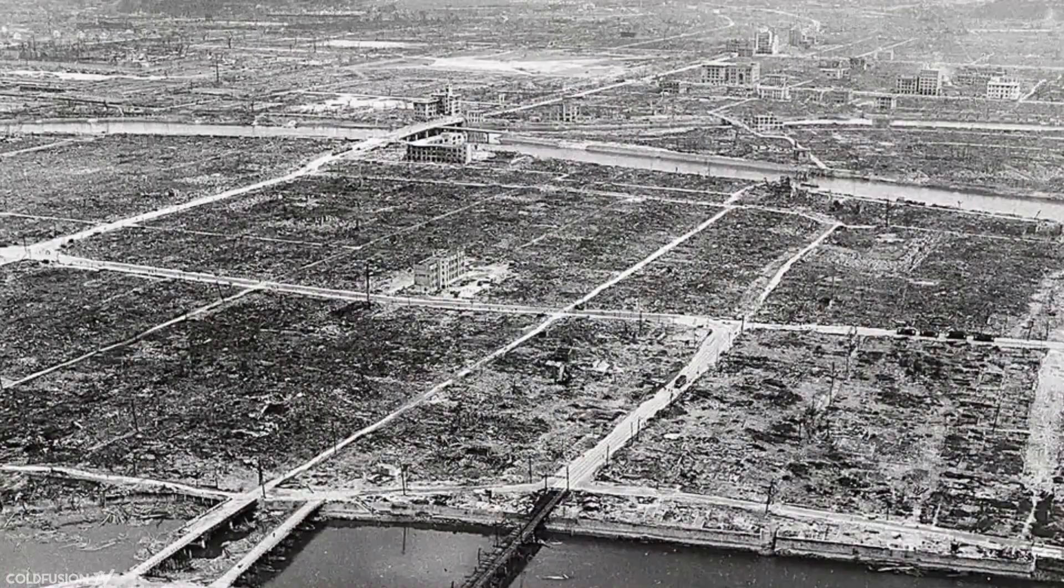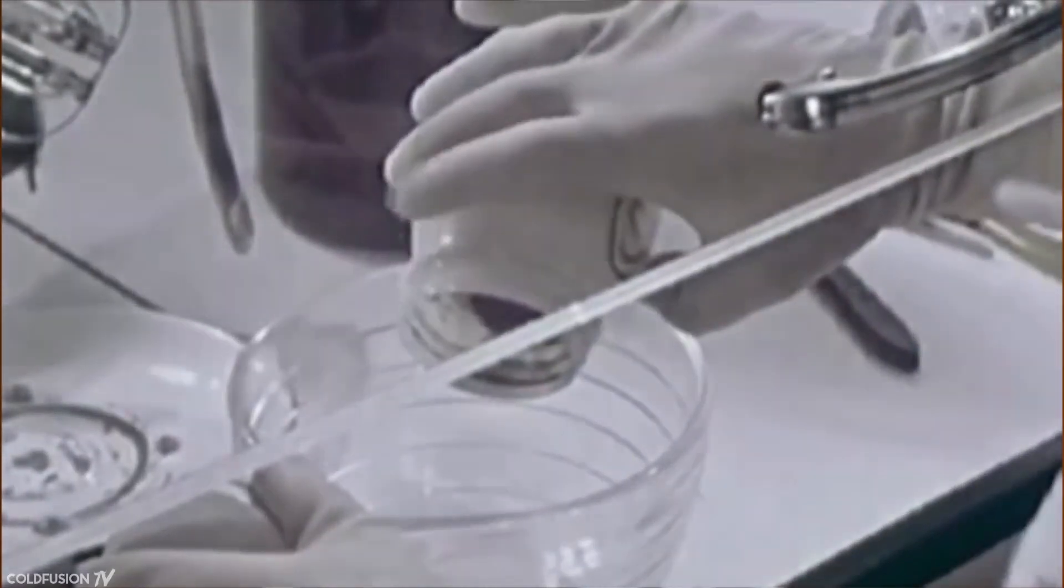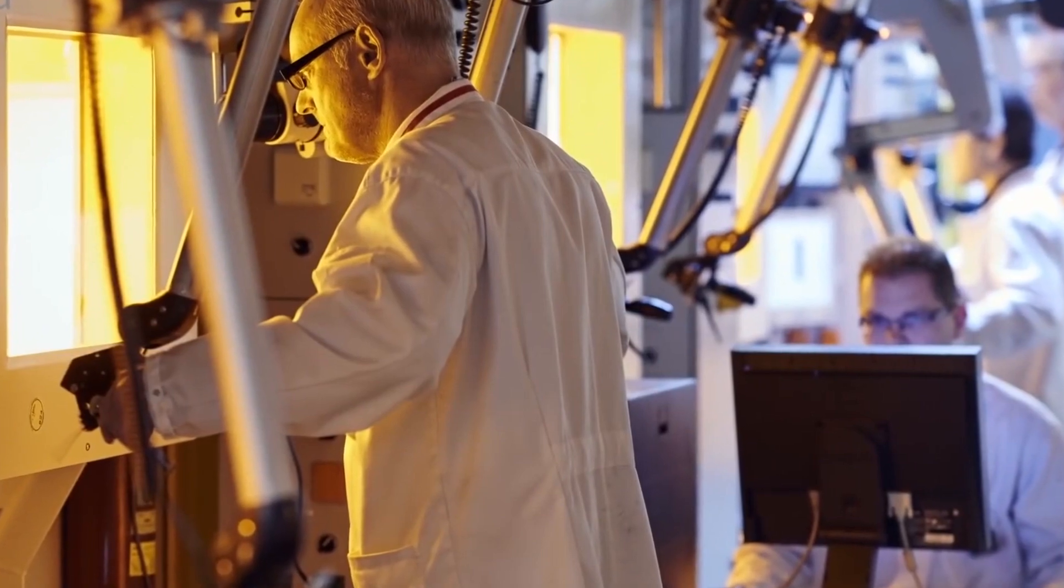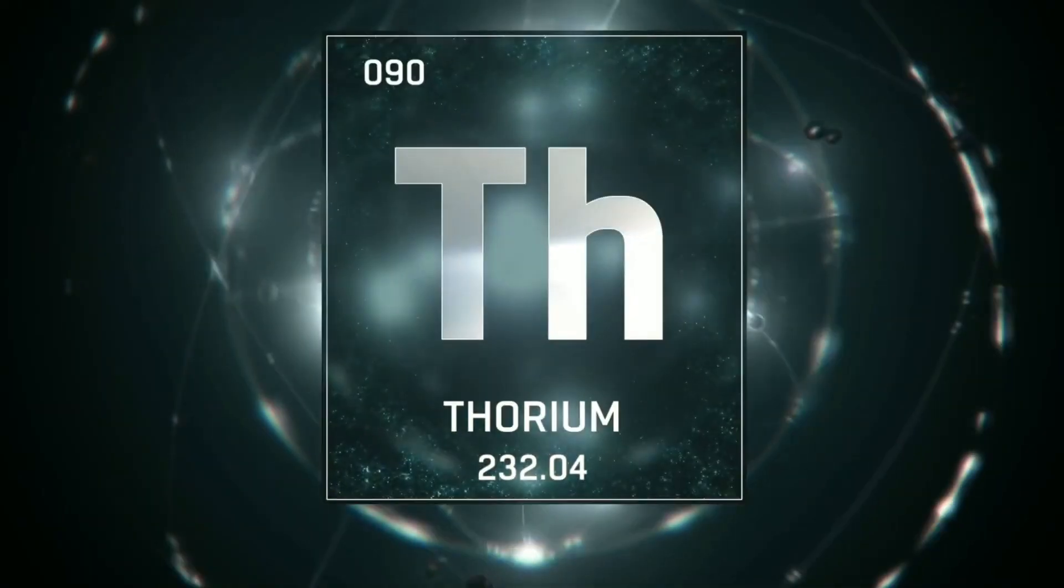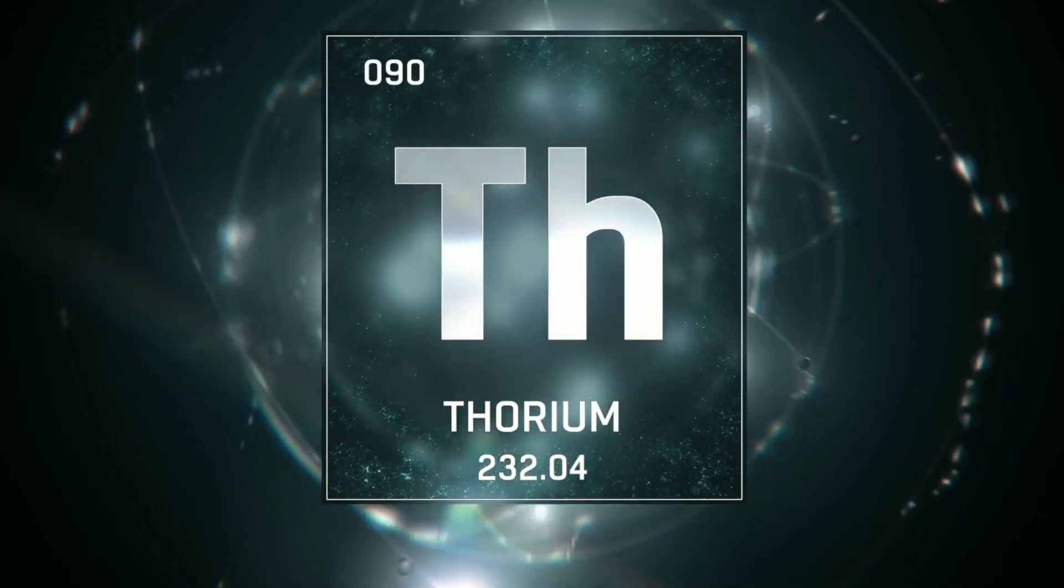However, it was not until 1885 that thorium was isolated in its pure metallic form by the Swedish chemist Matteo Dor Cleve. Cleve succeeded in reducing thorium tetrachloride with potassium, resulting in the production of pure thorium metal. This achievement solidified thorium's place as a distinct element in the periodic table.